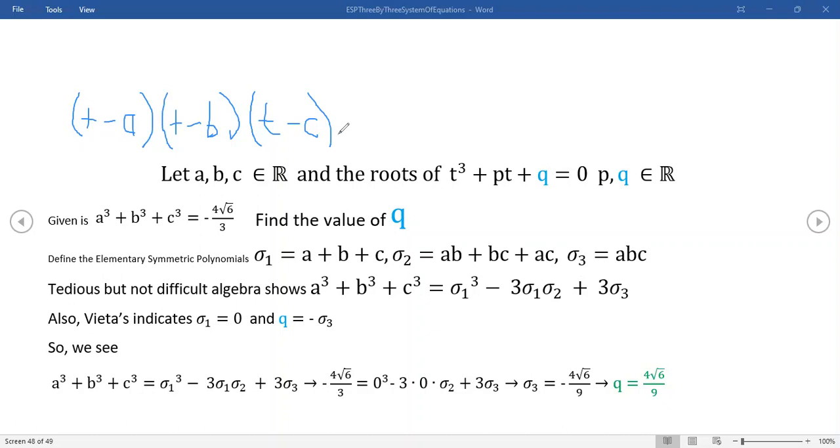Now, what happens when you multiply this out, this is called Vieta's result, is you actually get that this is equal to certainly t³ plus, you would actually get a + b + c, but a + b + c is actually σ₁, and that would be times t². You would get the sum of the zeros in front of the t² term.